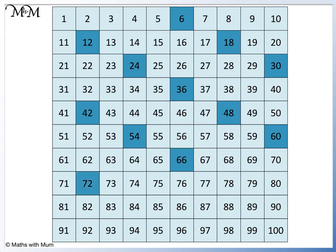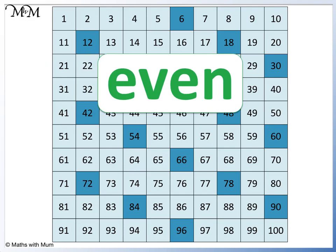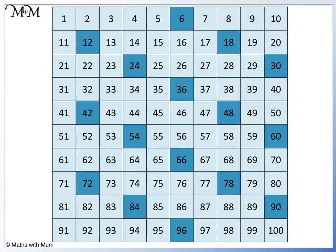We can highlight the rest of the grid by adding on 6. If we look at the multiples of 6, we can see that they end in 2, 4, 6, 8, and 0. This means that they are all even. All multiples of 6 are even, but not all even numbers are multiples of 6.